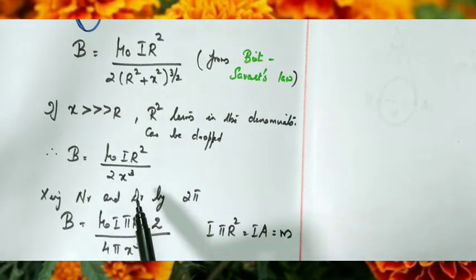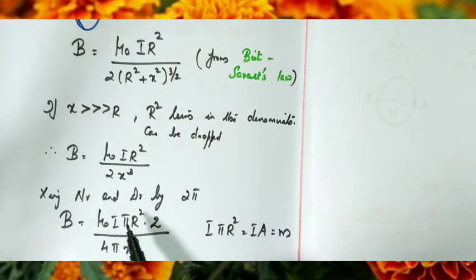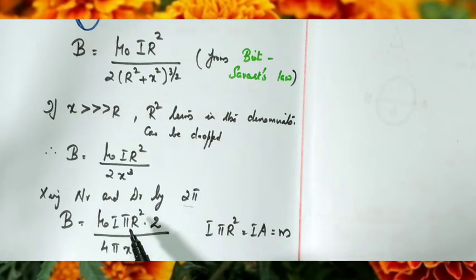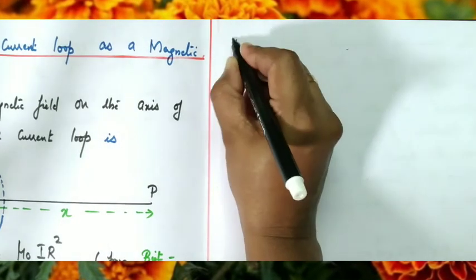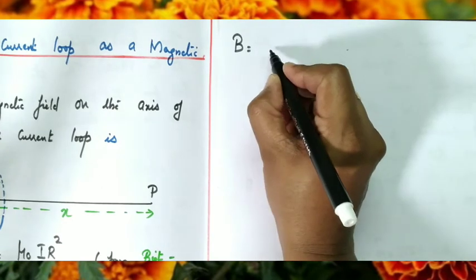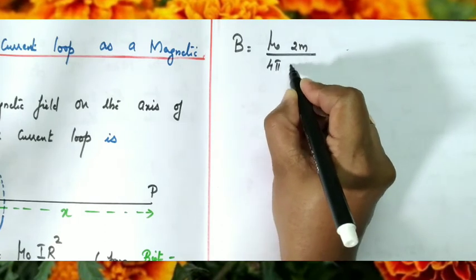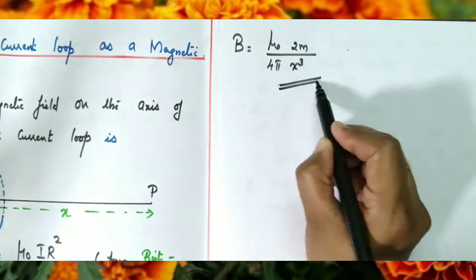Multiplying numerator and denominator by 2π, the expression becomes B = μ₀I·πR²·2/(4πX³). Since I·πR² equals I times area A, which is the magnetic dipole moment M = IA, this simplifies to B = (μ₀/4π)·(2M/X³).